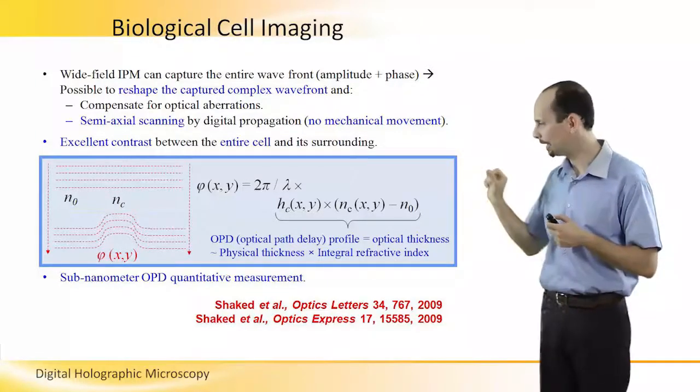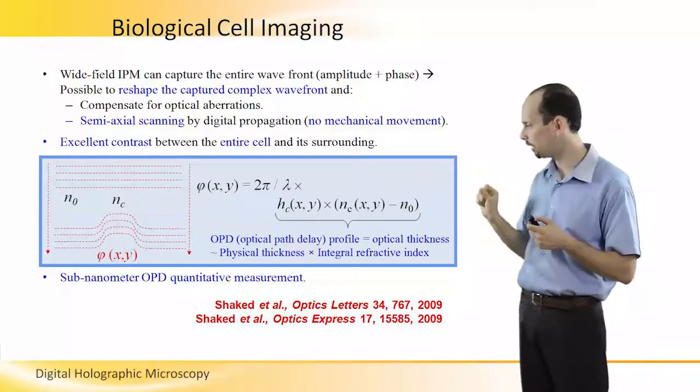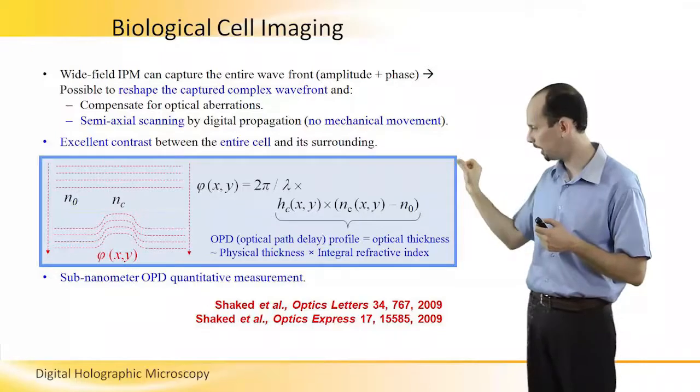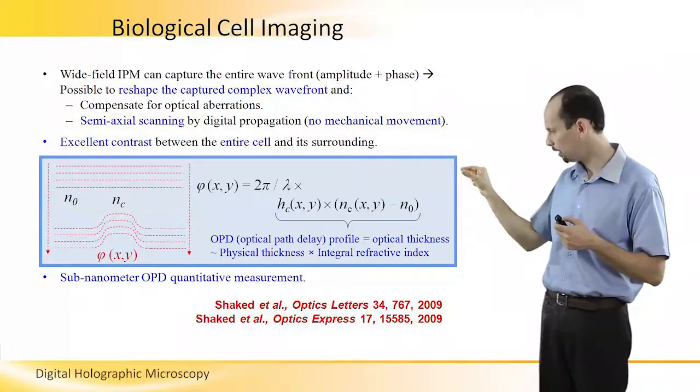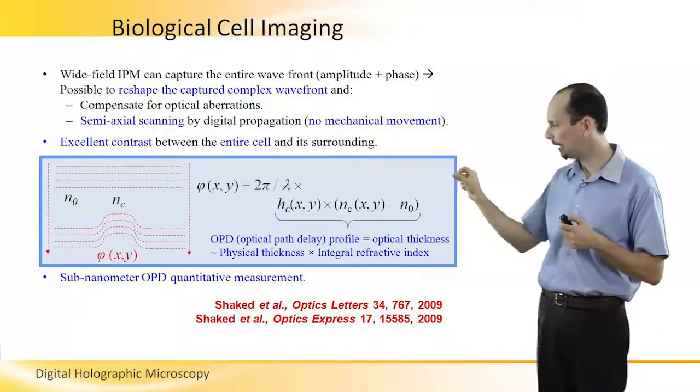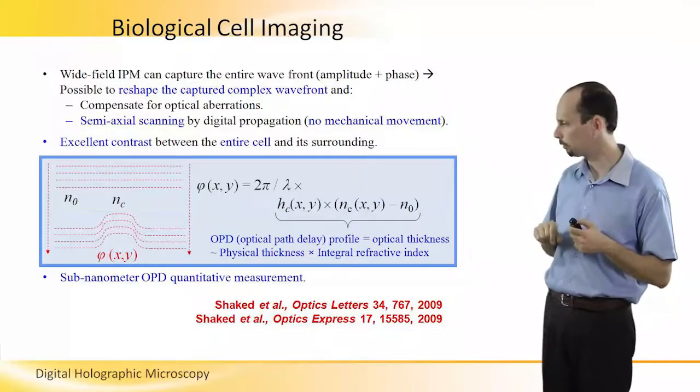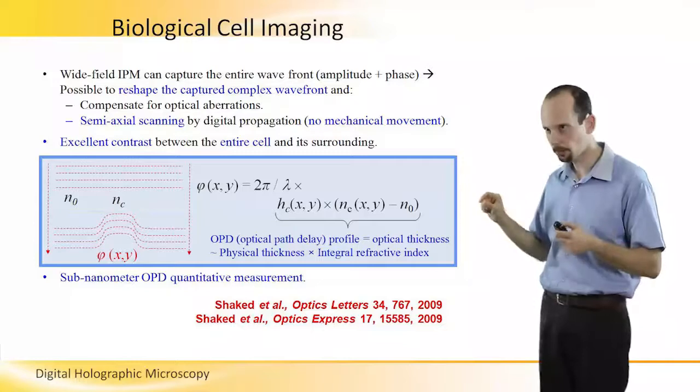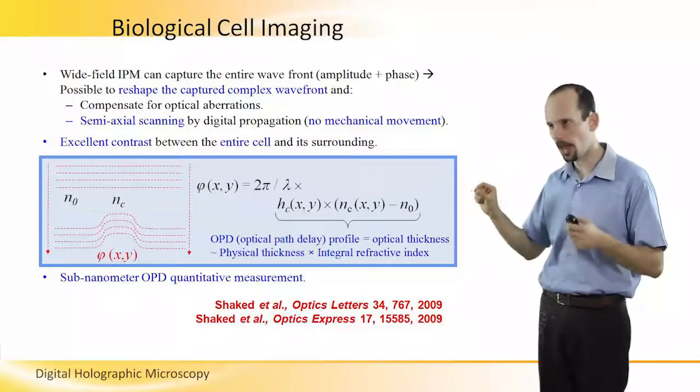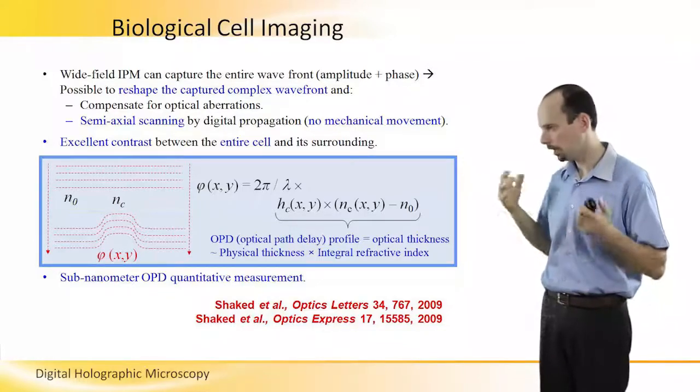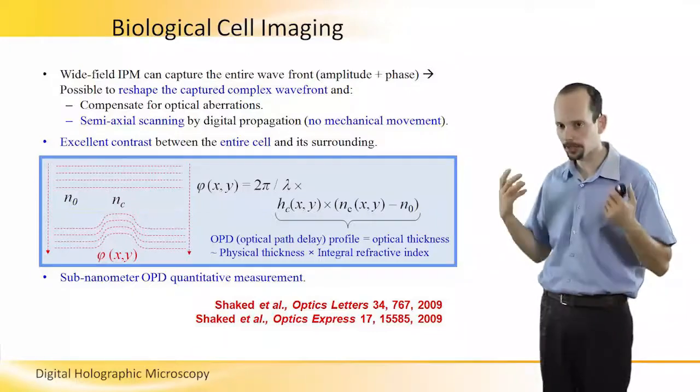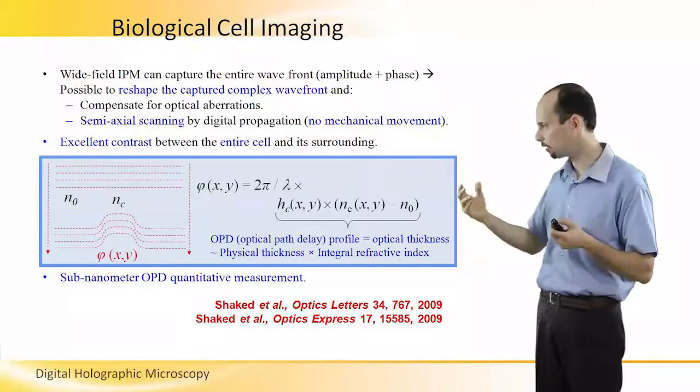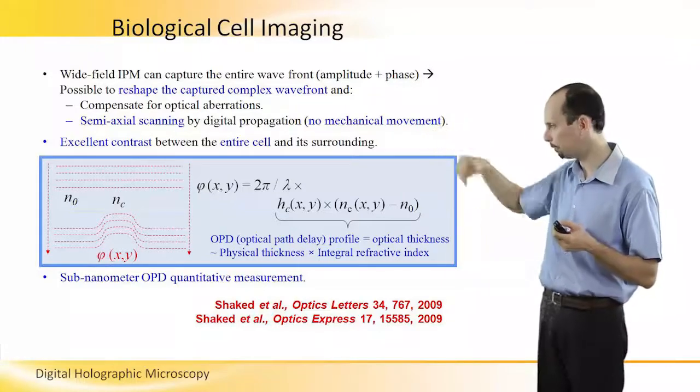The multiplication between the refractive index of the cell minus the refractive index of the medium, multiplied by the physical thickness of the sample, is called OPD, optical path delay. This is a profile. It is dependent on x and y. The optical thickness of the sample is equal to the physical thickness of the sample, per each point on the sample, and the integral refractive index differences.